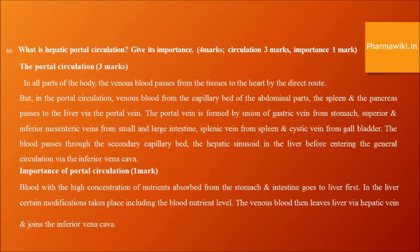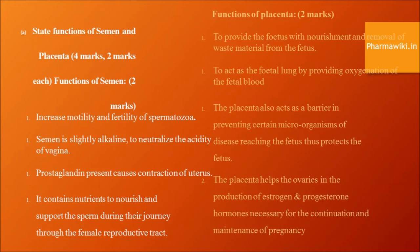Functions of the placenta. The placenta provides the fetus with nourishment and removes waste material from the fetus. It acts as a fetal lung by providing oxygenation of fetal blood. The placenta also acts as a barrier, preventing certain microorganisms from reaching the fetus, thus protecting it. The placenta helps the ovaries in the production of estrogen and progesterone hormones, necessary for the continuation and maintenance of pregnancy.